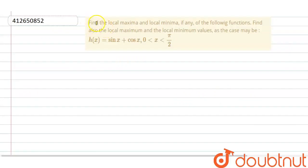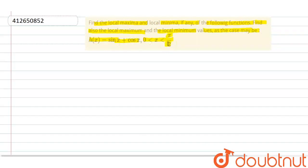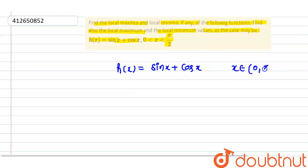Hello guys, so today our question is: find the local maxima and local minima, if any, of the following function. Find also the local maximum and local minimum values, as the case may be, where h of x is equal to sin x plus cos x, where x belongs to 0 to pi by 2.